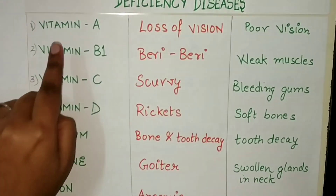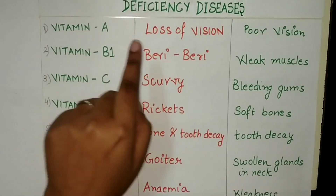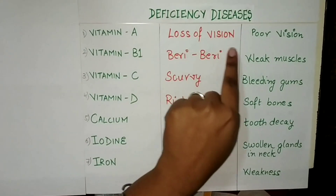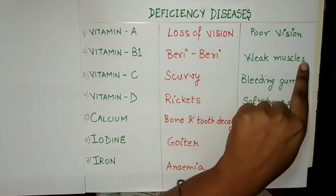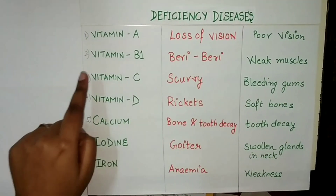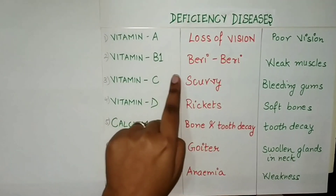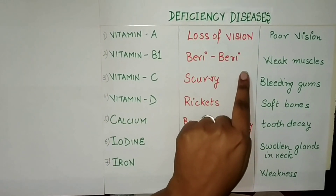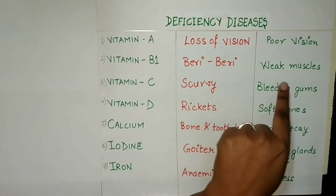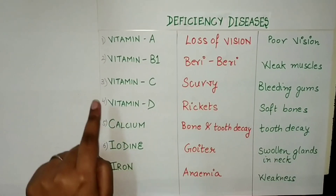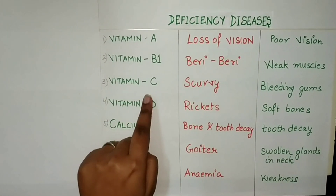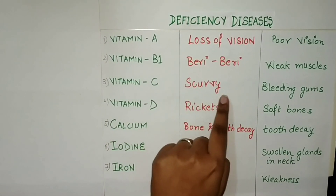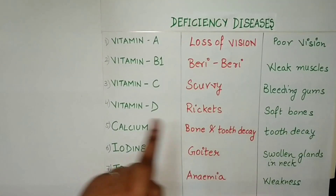Lack of vitamin A would cause loss of vision; the symptom is poor vision. Lack of vitamin B1 would cause beriberi; the symptom is weak muscles. Lack of vitamin C would cause scurvy; the symptom is bleeding gums.